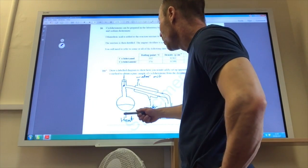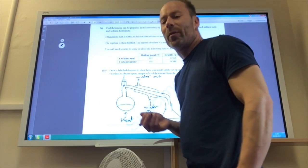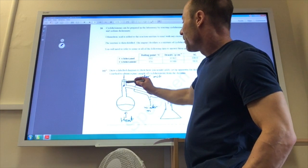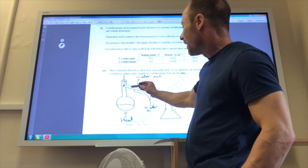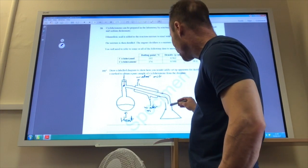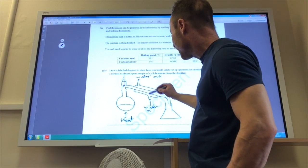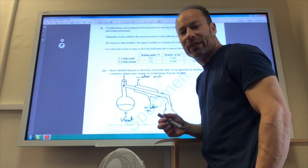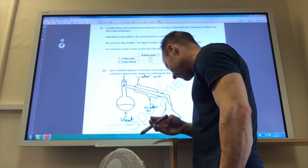So we've got a round bottom flask, heat source - you'd probably use a heating mantle for that one. Thermometer bulb at the level where the vapour comes over, then it's going to drip down into the receiving flask. Water in at the bottom of the reflux condenser and water out at the top, so it goes against gravity.